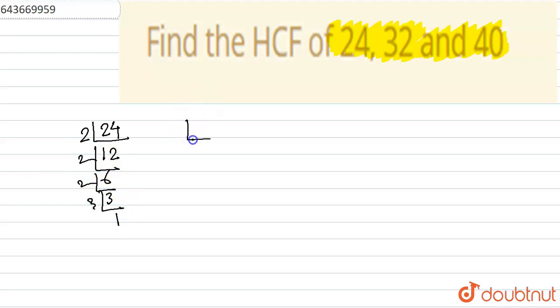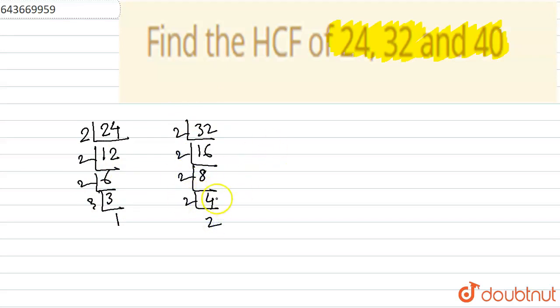Again, for 32 we have: 2 times 1 is 2, 2 times 16 is 32, 2 times 8 is 16, 2 times 4 is 8, 2 times 2 is 4, and 2 times 1 is 2.